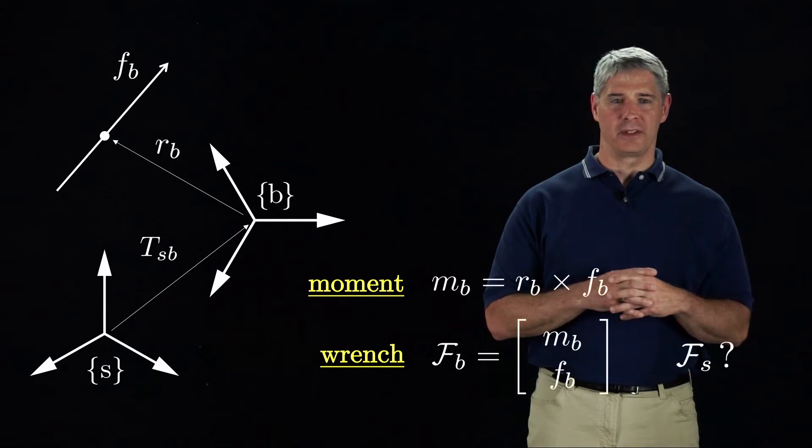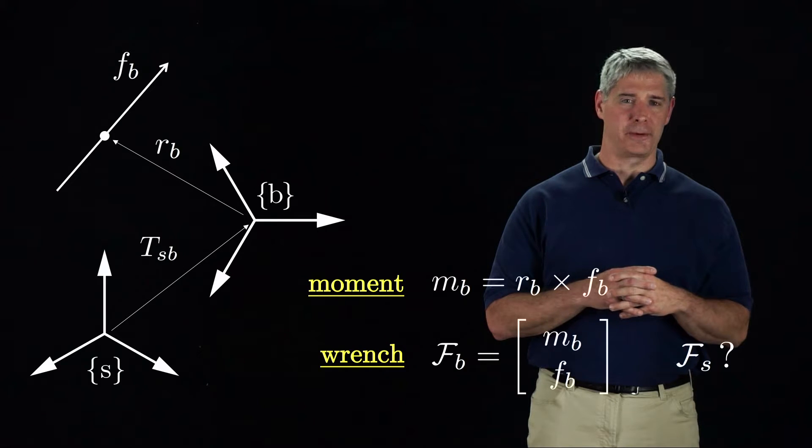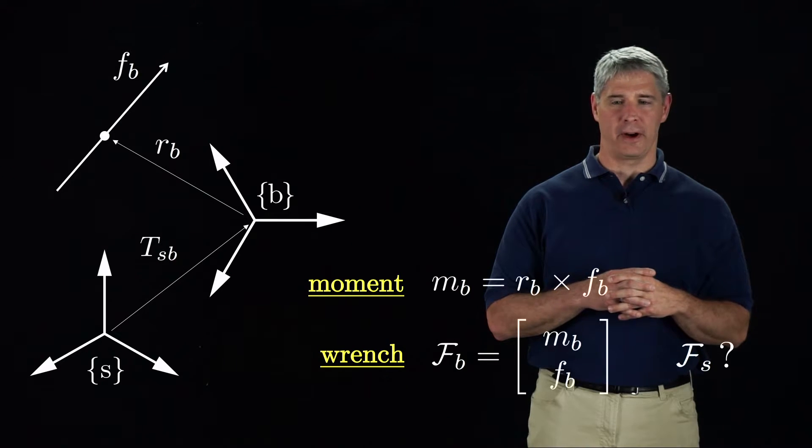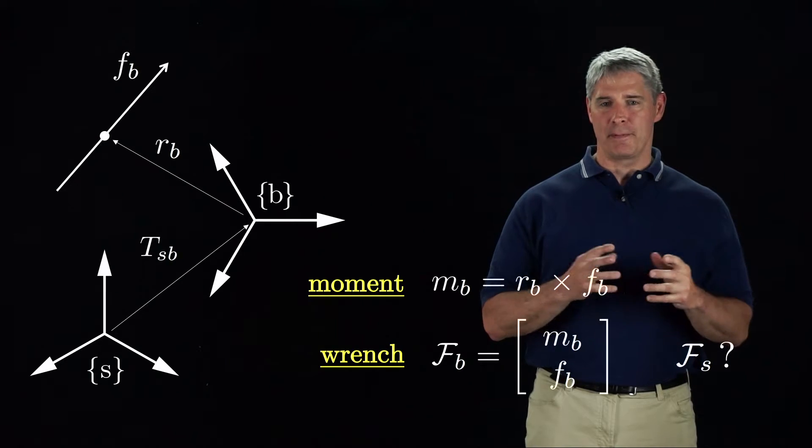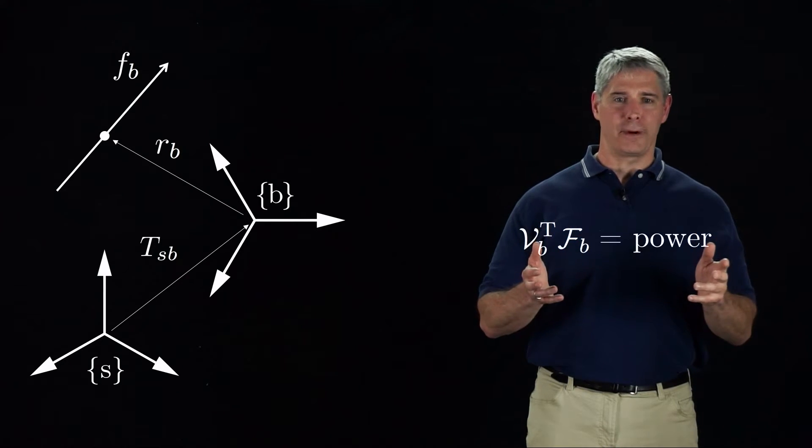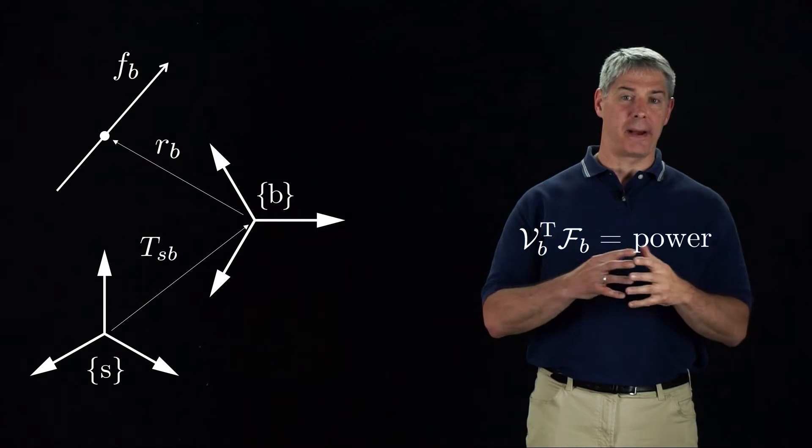Since we know the transform TSB, we should be able to represent this same wrench in the S frame. To derive the relationship between the wrenches FB and FS, keep in mind this fact: the dot product of a twist and a wrench is power.